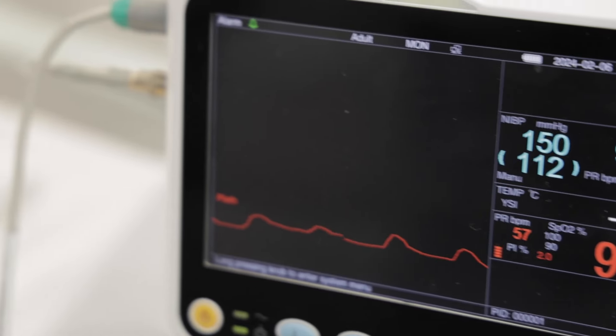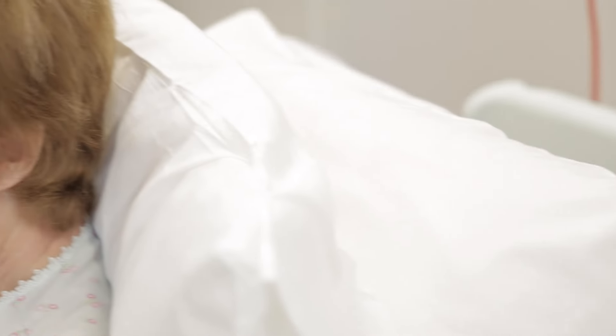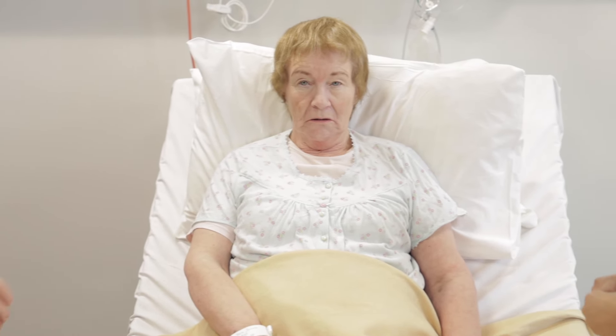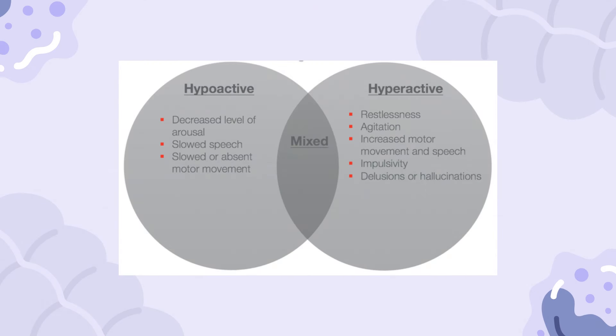Unfortunately, Jane hasn't gotten any better and has been sent to the hospital from the care home. Her first part of the hospital journey takes place at the emergency department. Jane is exhibiting classic signs of delirium. She's confused, agitated and distressed — these are signs of hyperactive delirium. Hyperactive delirium is when someone becomes restless, agitated and might hallucinate or act strangely because their brain isn't working correctly, often due to an illness or medication. It can be scary and confusing for them, and they need special care and treatment to help them get better.